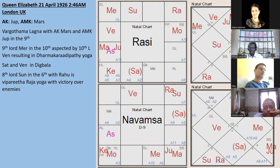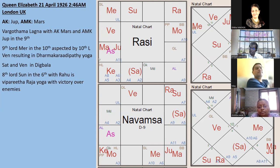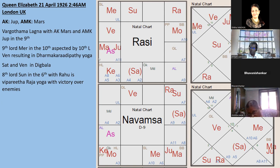Looking at Queen Elizabeth's Navamsa: Venus is the tenth lord, Mercury the ninth lord - a Dharma-Karma yoga in a Kendra. Venus, Saturn, and Mercury are all in Kendra with a Vargottama lagna. The ninth lord is strong, the fifth and ninth are strong. Sun in the sixth house creates a Viparita yoga - the eighth lord in the sixth with Rahu destroys all enemies. Jupiter as AK-AMK in the ninth with the dispositor in the tenth is such a powerful yoga.